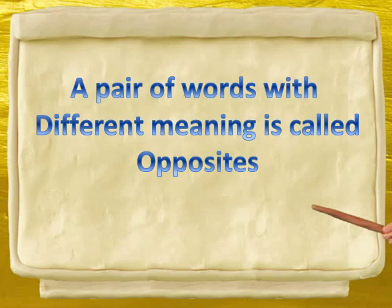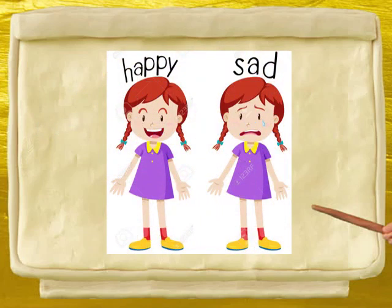जैसे, happy and sad. आप देखो बच्चों, यहाँ पर एक girl है जो है happy. और एक girl sad है. तो happy का opposite क्या है? Sad.